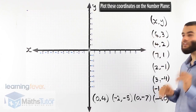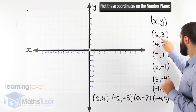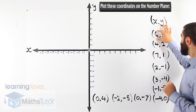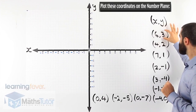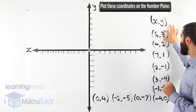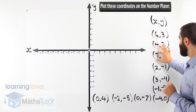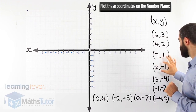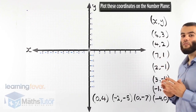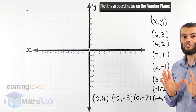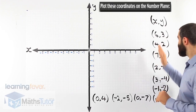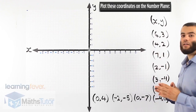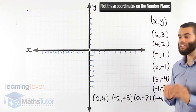Coordinates are always written in brackets with a comma in between. This is your x and this is your y. It's very important to realize that the x always comes first and then the y comes second.